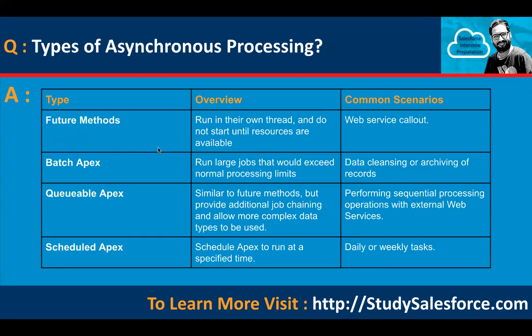What are the types of Asynchronous Processing? We have four types: Future Method, Batch Apex, Queueable Apex, and Scheduled Apex.